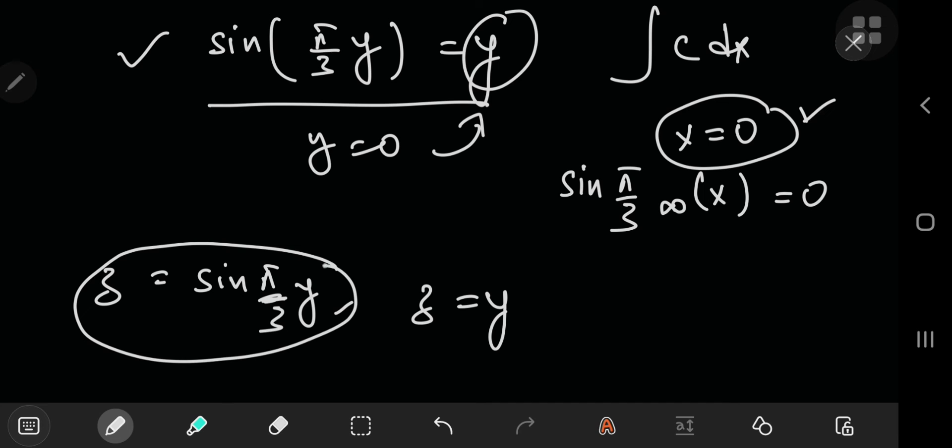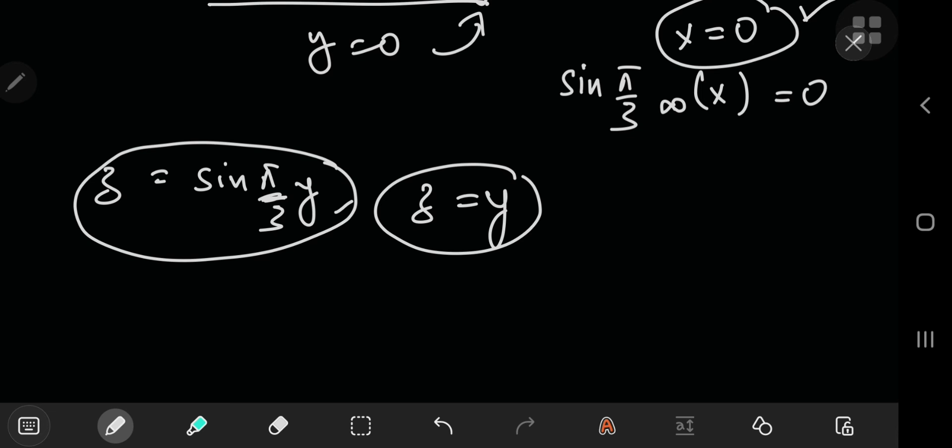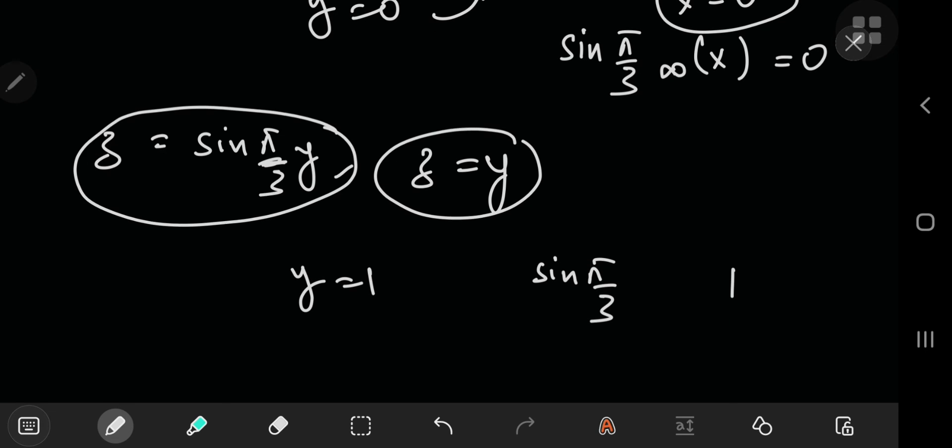And then I tried plugging in values. I started off with letting y equal to one, and if y equals one, then you have sin(π/3 times 1), and sin(π/3) is less than one. So the next most obvious guess that came to my mind was not taking zero, not taking one, taking something right in the middle: one-half.